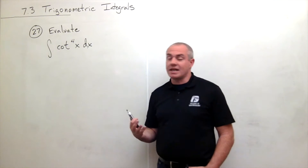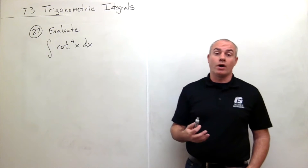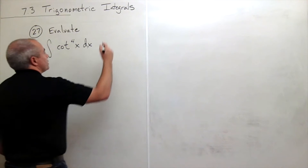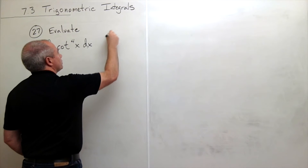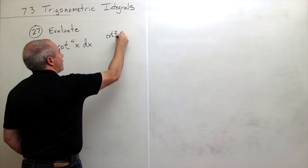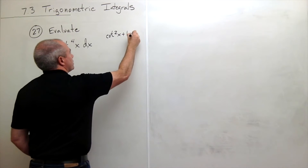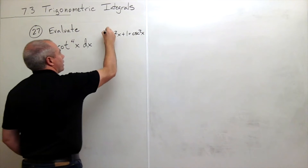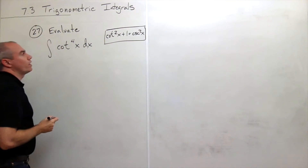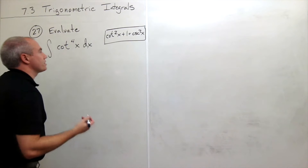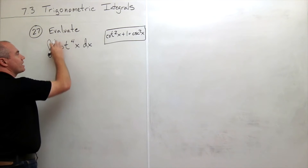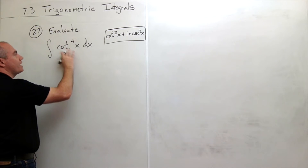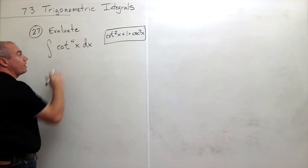So I need to use some identities to help me out here. One identity from trigonometry that I know is that cotangent squared of x plus one is cosecant squared of x. So what I could do is see that I really have cotangent of x squared, quantity squared, here.